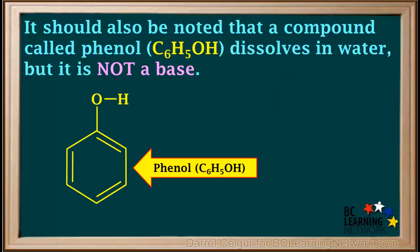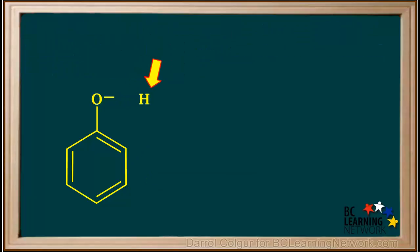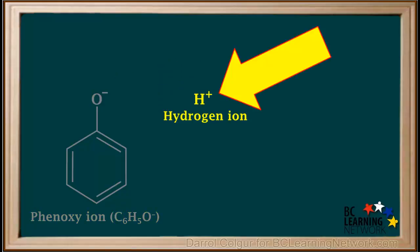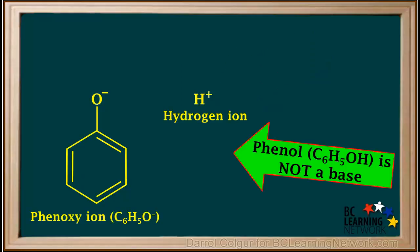It should also be noted that a compound called phenol, C6H5OH, dissolves in water. But it is not a base. In water, a few phenol molecules will lose this H as an H+ ion. And the negative charge on the resulting phenoxy ion, C6H5O-, is stabilized by the presence of the benzene ring. The presence of free hydrogen ions means this is an acid. And because it produces hydrogen ions rather than hydroxide ions, we can state that phenol, with the formula C6H5OH, is not a base.